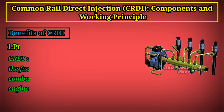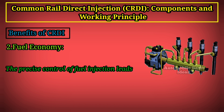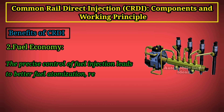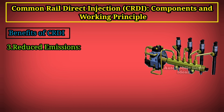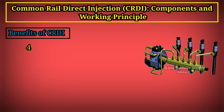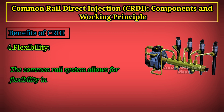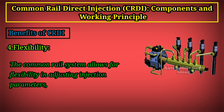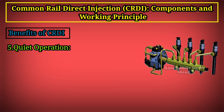Benefit 2 — Fuel Economy: the precise control of fuel injection leads to better fuel atomization, resulting in improved fuel economy. Benefit 3 — Reduced Emissions: CRDI systems contribute to lower emissions due to better combustion control. Benefit 4 — Flexibility: the common rail system allows for flexibility in adjusting injection parameters, making it adaptable to various driving conditions.